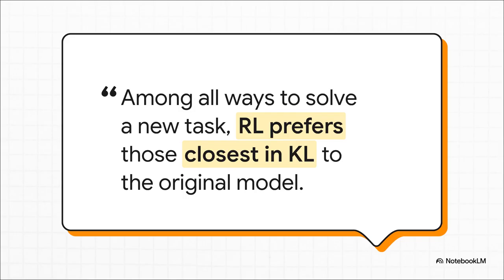You've probably heard of Occam's Razor. The simplest solution is usually the best, while RL's Razor is similar. Among all the possible ways to solve a new problem, RL has a natural bias to pick the solution that requires the smallest change from what it already knows. It picks the path of least resistance.